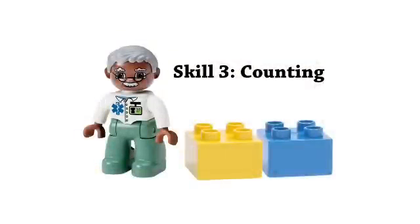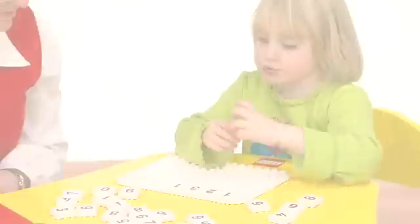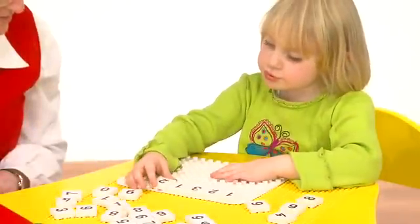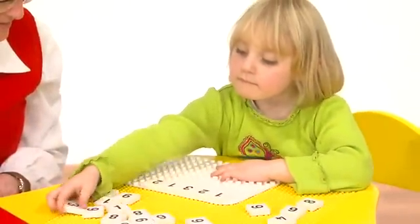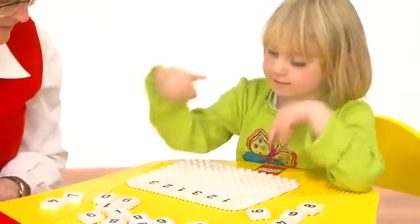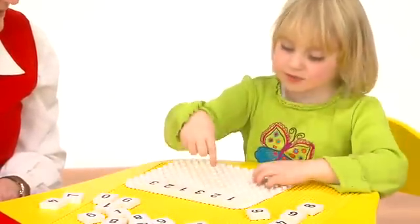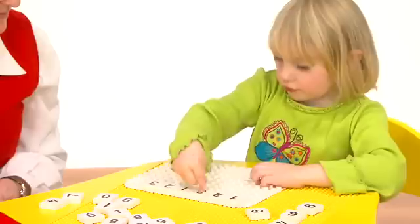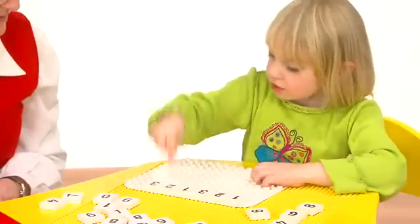Skill 3: Counting. Students can place the tiles in order starting with one. They should say the name of the numbers as they are placed on the base plate.